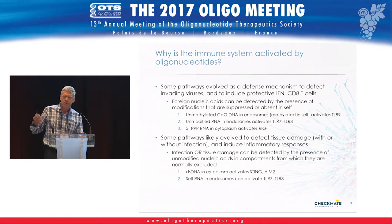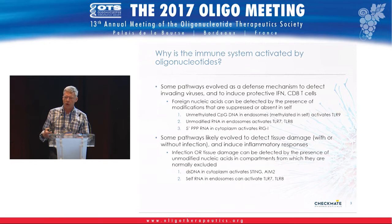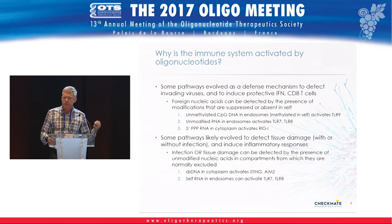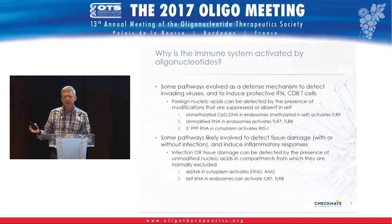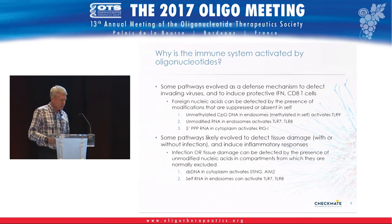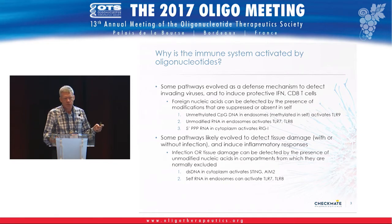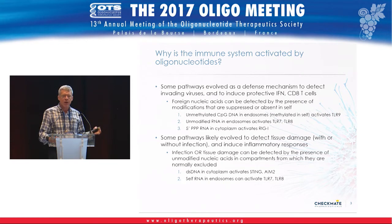RNA and DNA from self are normally not present in endosomes. If they are present and it's not an infection, then there must be tissue damage or something else going on. That may lead to a different type of immune response — more inflammatory kinds of responses: TNF, IL-6, potentially even leading to tissue repair.